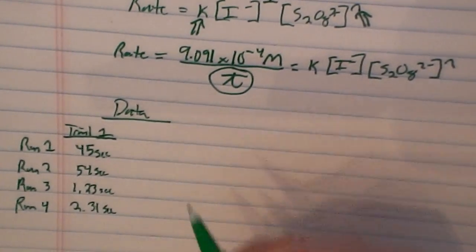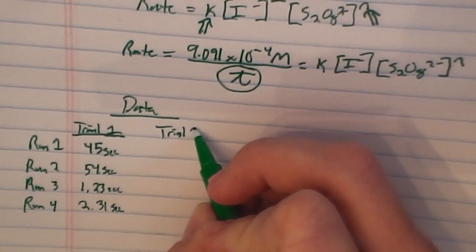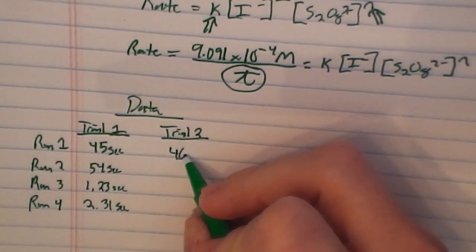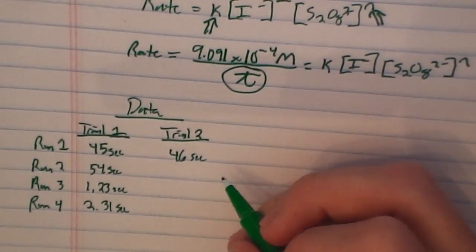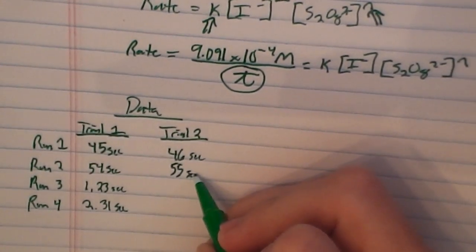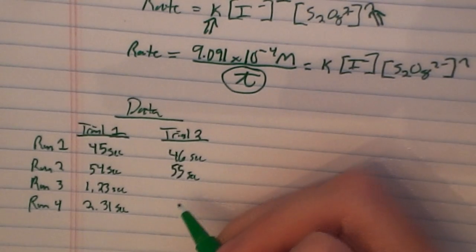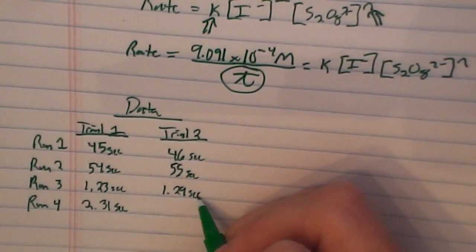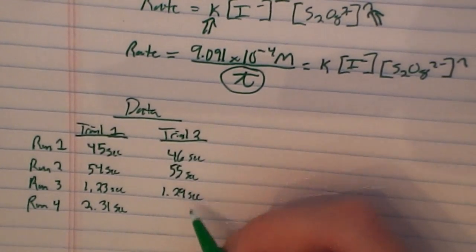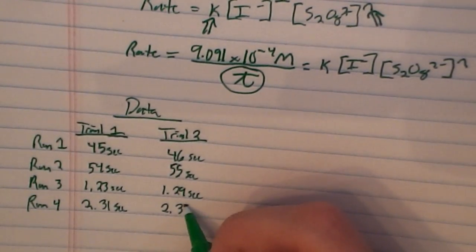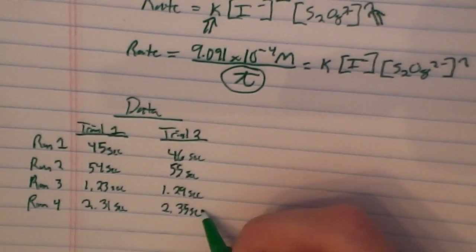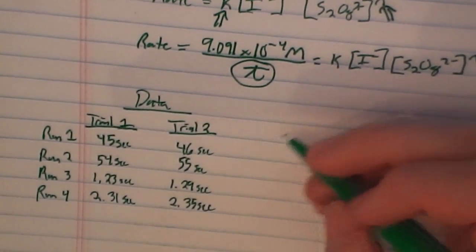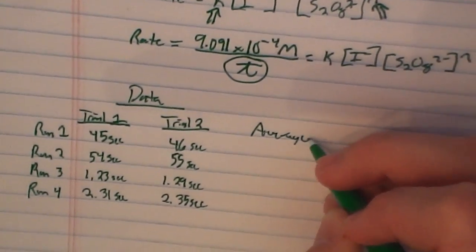Here's the experimental data for trial two. Run one: 46 seconds. Run two: 55 seconds. Run three: 1 minute and 29 seconds. Run four: 2 minutes and 35 seconds.